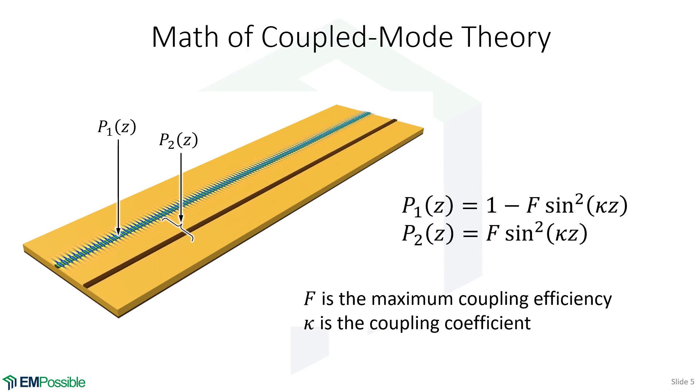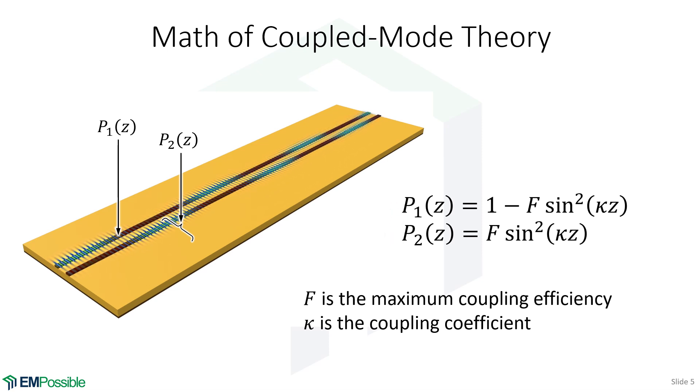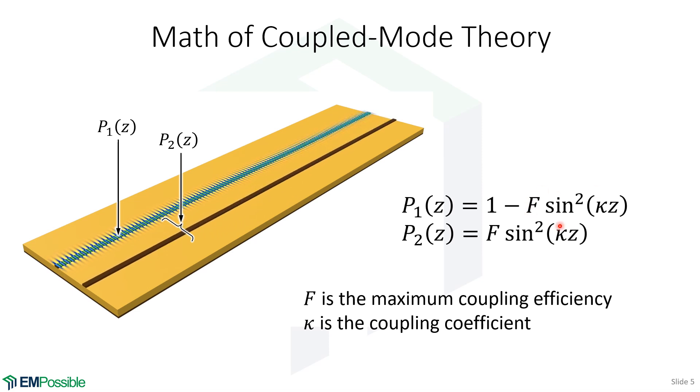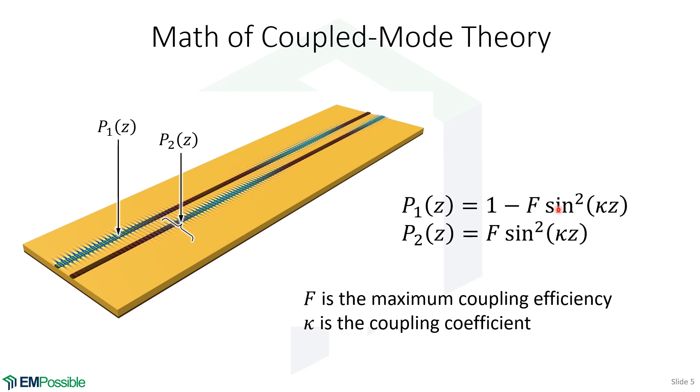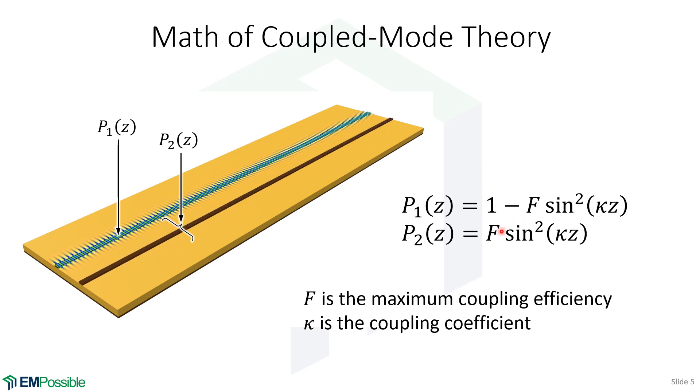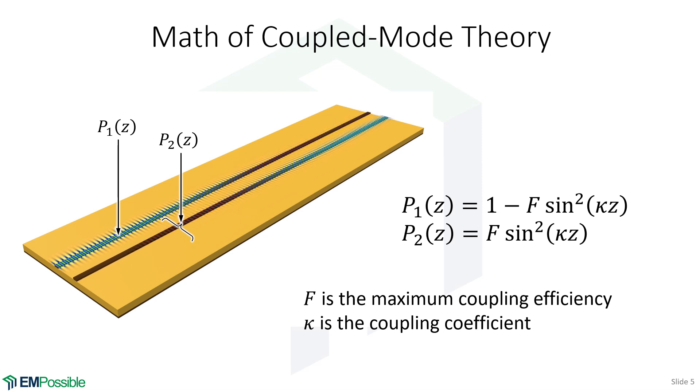Skipping a whole lot of math, which by the way is very good to go through, but the answer in the end: we end up with two equations that describe the power transfer. So when z is zero at the very beginning here, this sine squared ends up being zero, and we just have 100% of the power in the first line. But what you can see through these sine squared functions is that slowly the power will transfer from one waveguide into the next or one transmission line into the next. This is described here with two different parameters. F is the maximum coupling efficiency, so if we have 100% coupling efficiency, F would be one. If there's losses, asymmetries, or other things, that will be less than one.